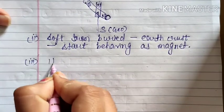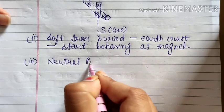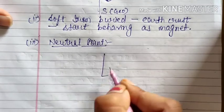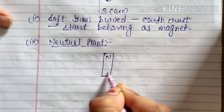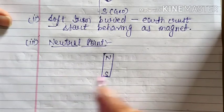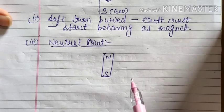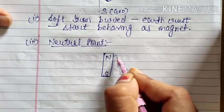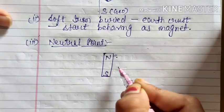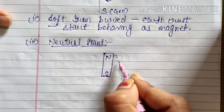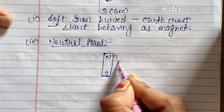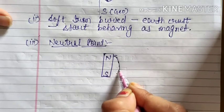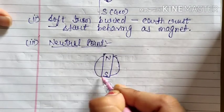The third point is neutral points — this is a very important concept. As we have seen in the last class, we can plot magnetic field lines with the help of a bar magnet. We take a white sheet of paper, place a bar magnet, and use a magnetic compass near one end of the magnet — it will show a deflection. In the direction of the deflection we plot a point, then move the compass and repeat. When we combine all these points, we get curved lines known as magnetic lines of force or lines of magnetic field.